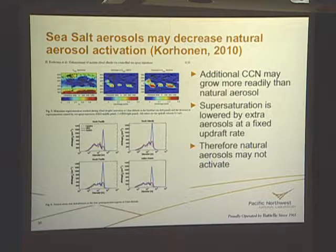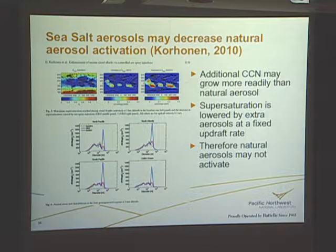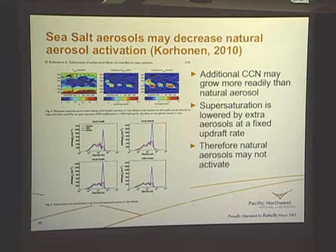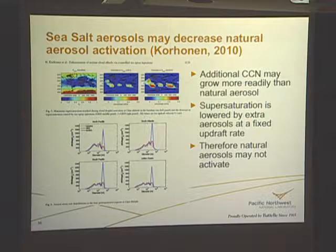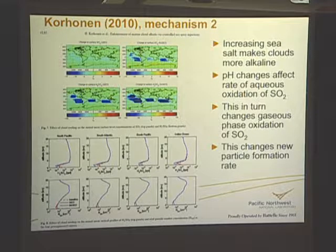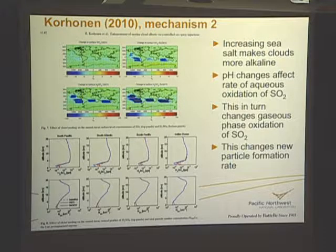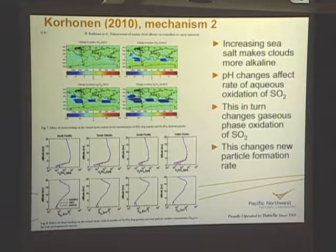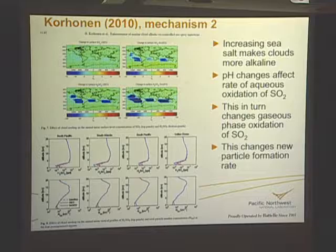Under other circumstances — in polluted conditions with weak updrafts — increasing sea salt fluxes can actually decrease activation due to competition with the coarse-mode sea salt particles, which is something Graham was talking about with giant nuclei. These processes have been looked at briefly in global models, but not particularly effectively. Hanalee Karhonen published a study exploring these effects with a very detailed size-resolved microphysics model with prescribed dynamics — she found that supersaturation was lowered by the extra aerosols, and natural aerosols were not activating. She also pointed out that increasing sea salt might make the pH of the water more alkaline, affecting the rate of aqueous oxidation of SO2 or DMS, in turn influencing new particle formation.